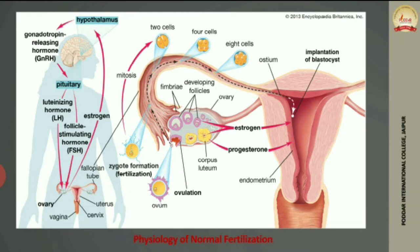The important hormones are follicle stimulating hormone (FSH) and luteinizing hormone (LH). These hormones are secreted by the brain and directly affect the ovaries. The ovaries contain multiple eggs or follicles; due to these hormones, one follicle in one ovary develops to maturity, and through ovulation the egg is released into the fallopian tubes. If sperm is available, fertilization occurs.